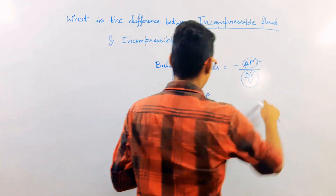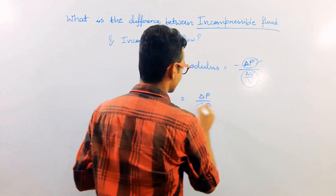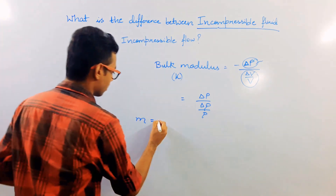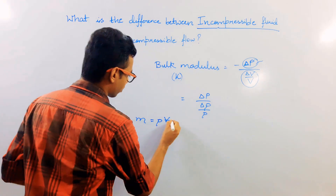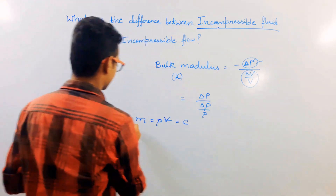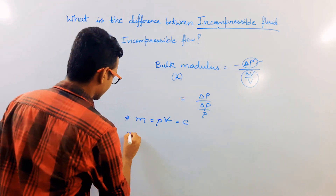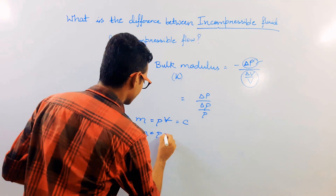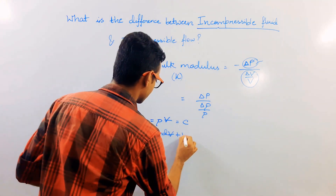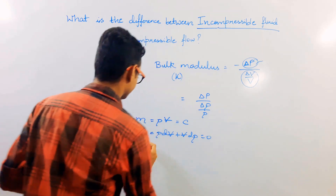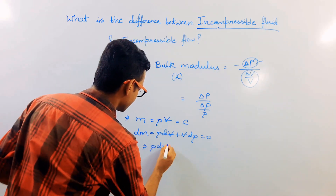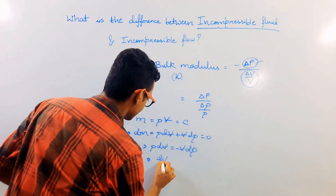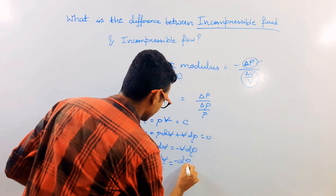This formulation comes from the continuity — conservation of mass: mass m equals density times volume, which is constant. Differentiating: ρ dV + V dρ = 0. Therefore, dV/V equals negative dρ/ρ. That is why bulk modulus K can be written with this substitution.